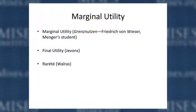They all used different names for this concept. Menger didn't name his principle — it was only later that his student Frederick von Wieser gave the term 'marginal utility' to Menger's contribution. Jevons called it 'final utility,' and the Swiss economist Walras used the term 'rareté.'